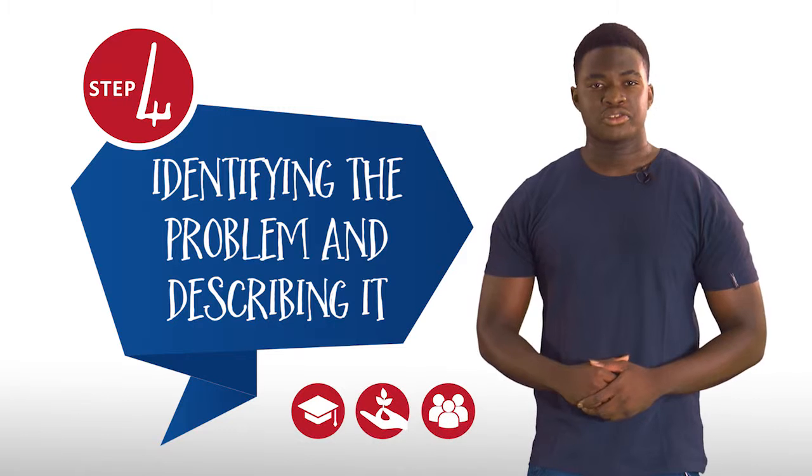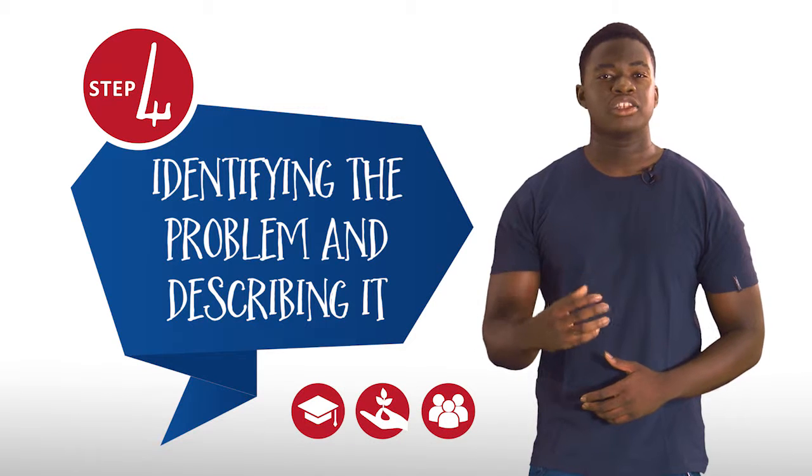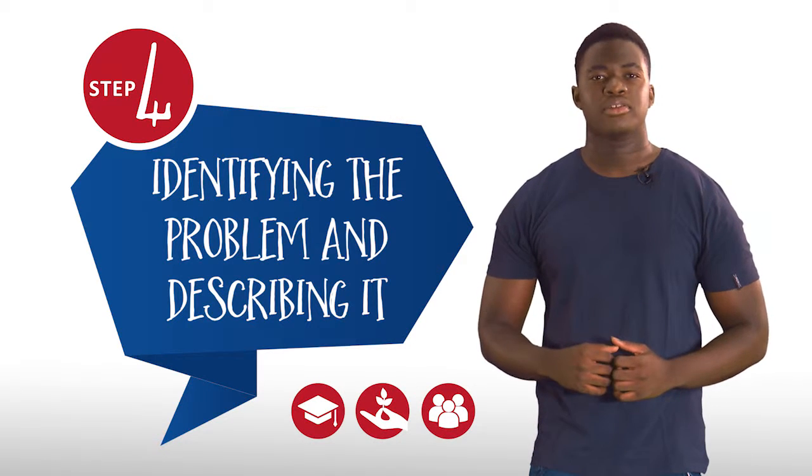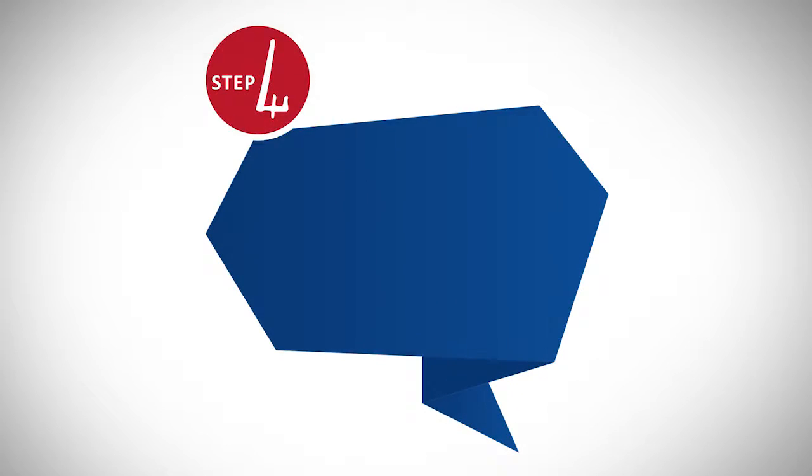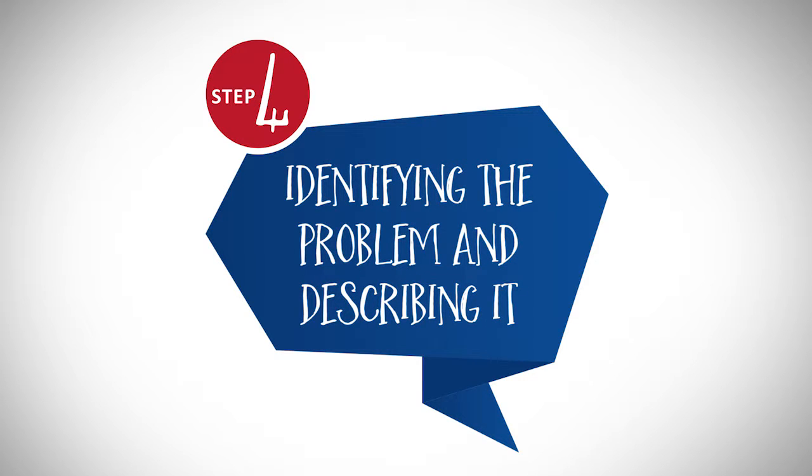The next step is a big one, as your team will differ in their opinions as to what is urgent and what they can actually tackle given their time and resources, and of course where the problem is close to their hearts. Identifying the problem in and around your school and making a clear description is what step 4 is all about. Step 4: Identifying the problem and describing it.